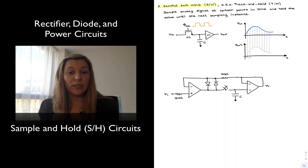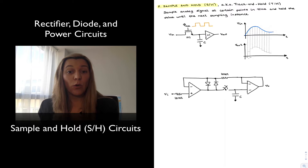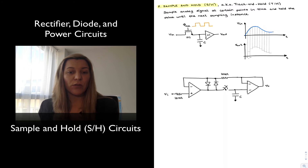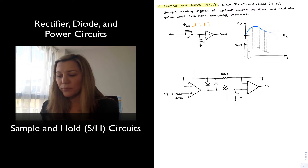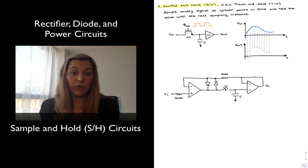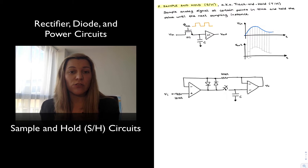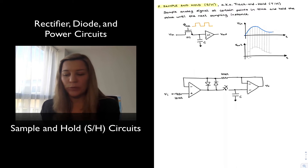The operation of the circuit is simple. It basically samples an analog input signal at specific points in time, and then it holds that sampled value of the analog input signal until the next sampling event. They're typically used — one of the most common uses of these circuits — is in the input stage of an analog to digital converter.